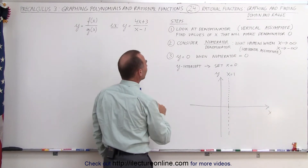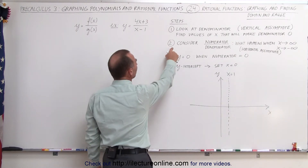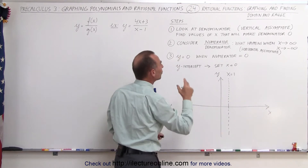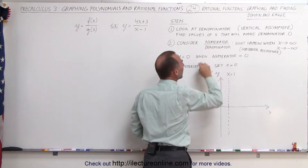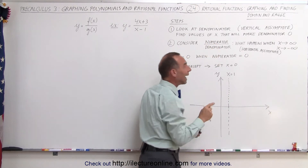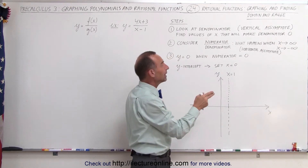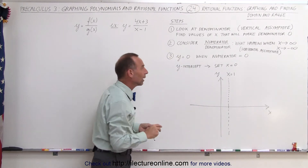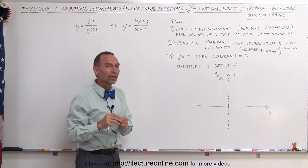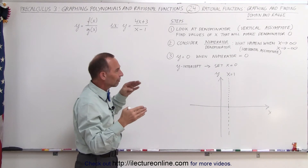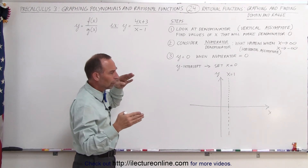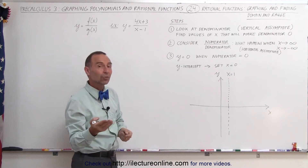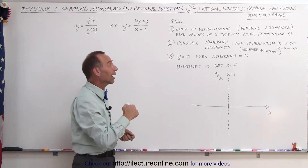Now that we've found that, let's move to step number 2. We consider the ratio of the numerator divided by the denominator — what happens when x goes to infinity or when x goes to negative infinity. Usually something happens where the function zeros in on a particular value, and that's where we'll have another asymptote.